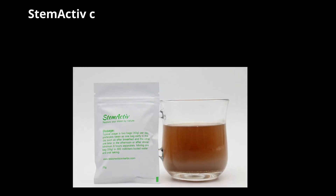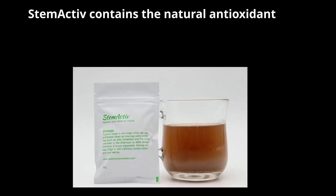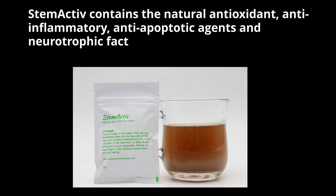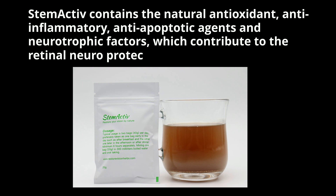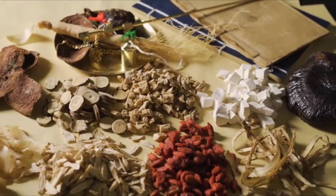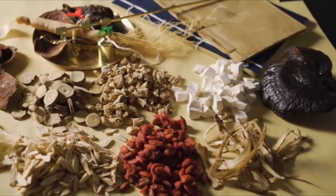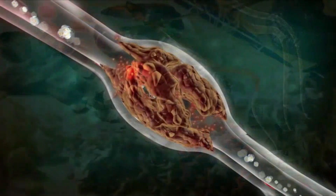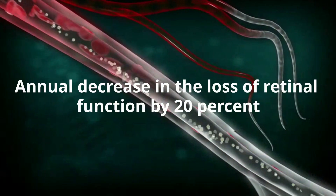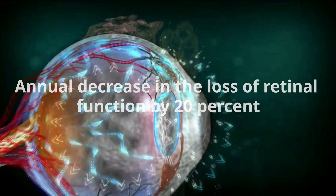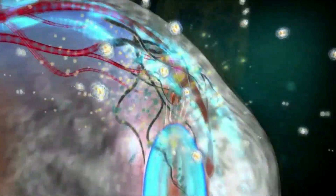StemActive contains natural antioxidant, anti-inflammatory, anti-apoptotic agents, and neurotrophic factors which contribute to retinal neuroprotection. Research has shown that RP patients who supplement with StemActive and consistently consume it for 3 to 6 months of the year have had, on average, an annual decrease in the loss of retinal function by 20%, as measured by ERG, in comparison to those not taking StemActive.